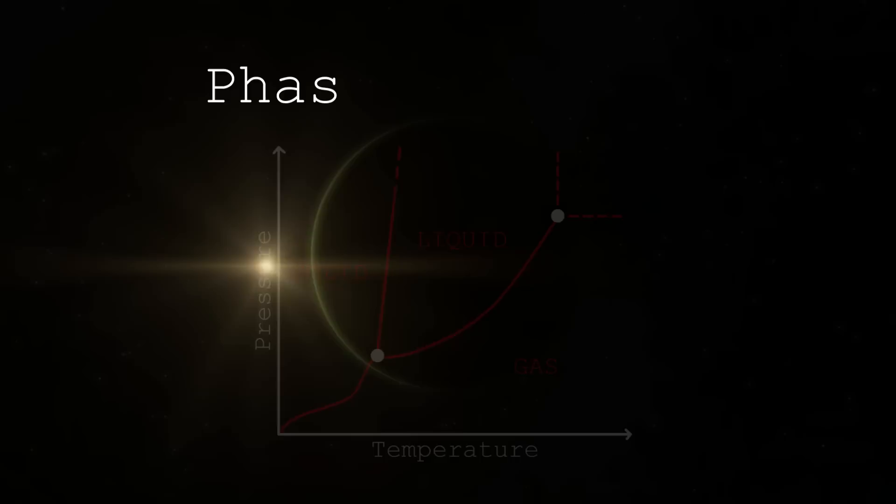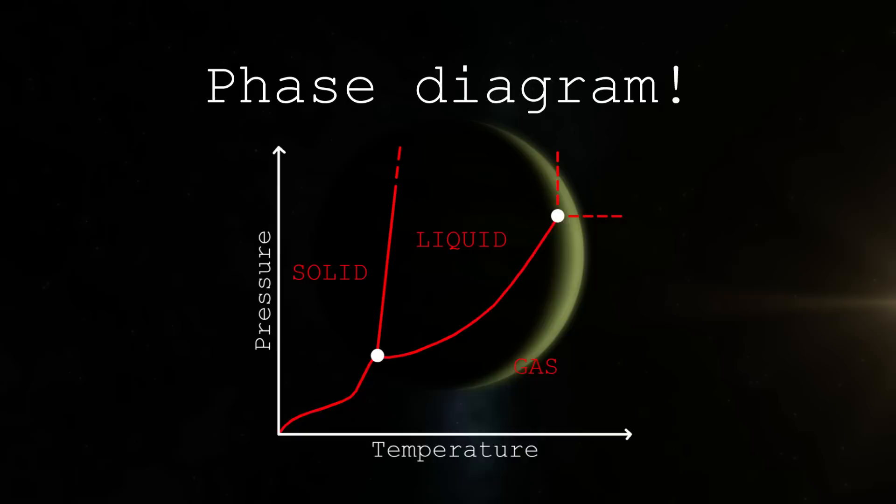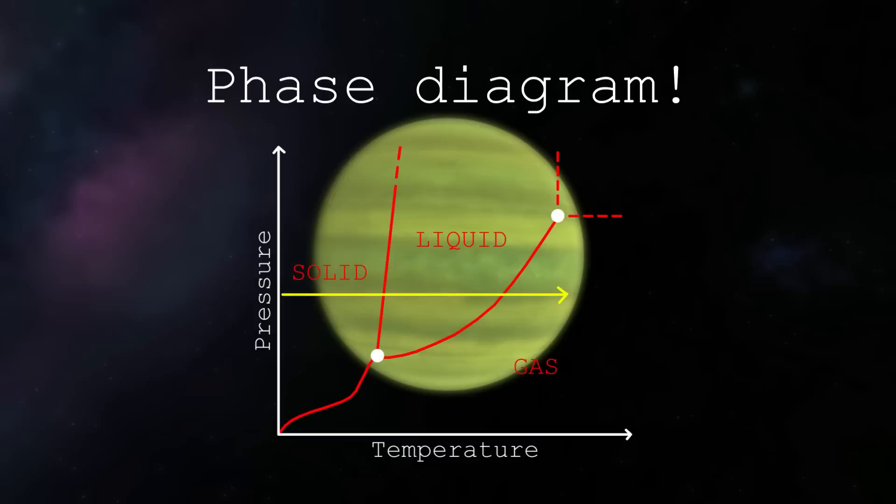A diagram that is different for each pure substance. On the x-axis we have temperature, and on the y-axis we have pressure. When there is a constant pressure, you will see that a substance goes from solid to liquid to gas as the temperature increases and the particles become more energetic.